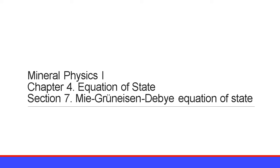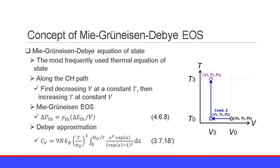In section 7 of chapter 4, Equation of State, I talk about the Mie-Grüneisen Debye equation of state. The Mie-Grüneisen Debye equation of state is the most frequently used thermal equation of state. It is constructed along the CH path, which is explained in the previous section.